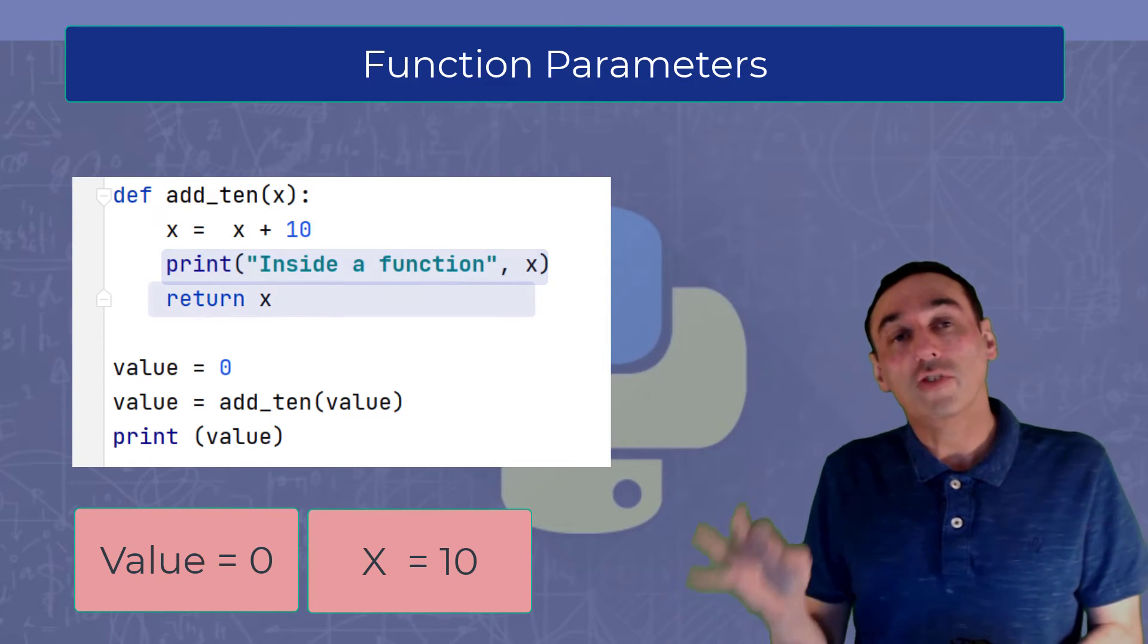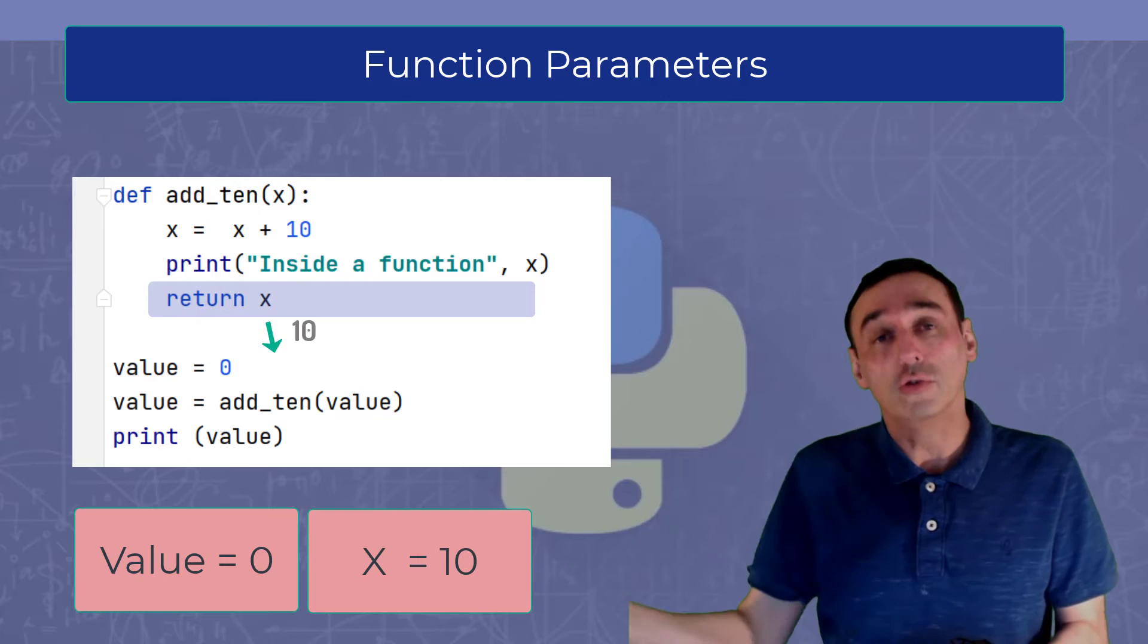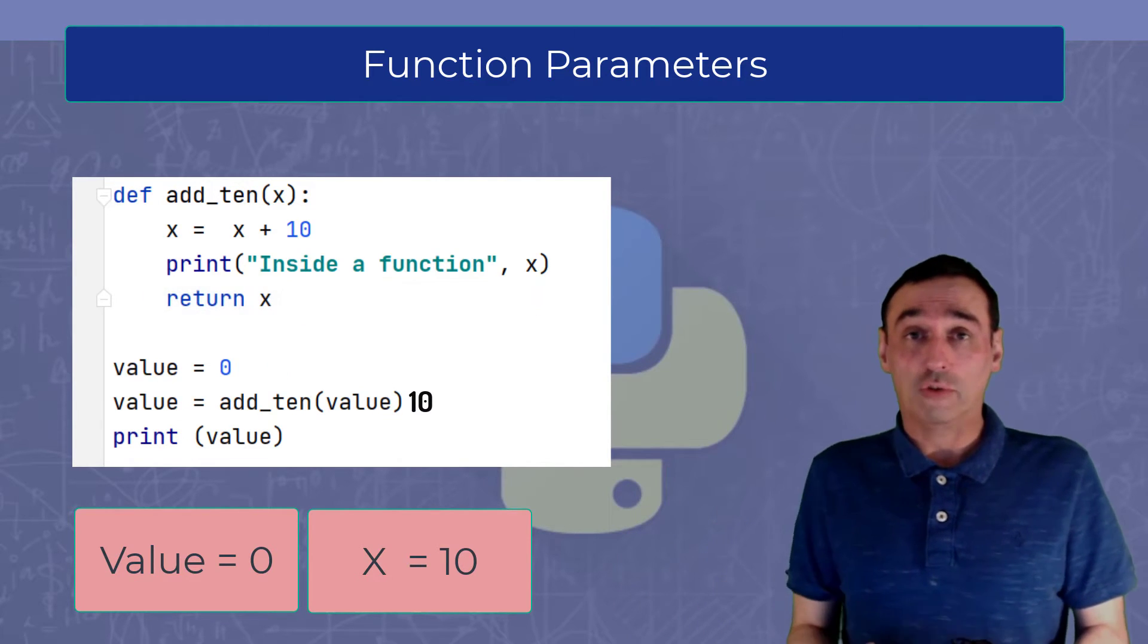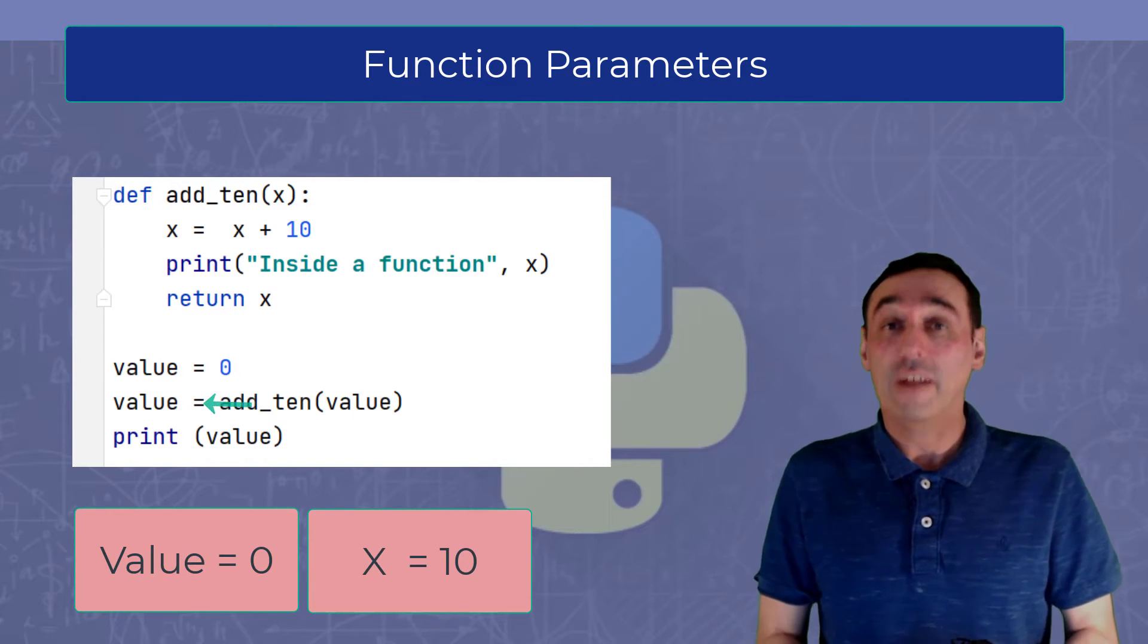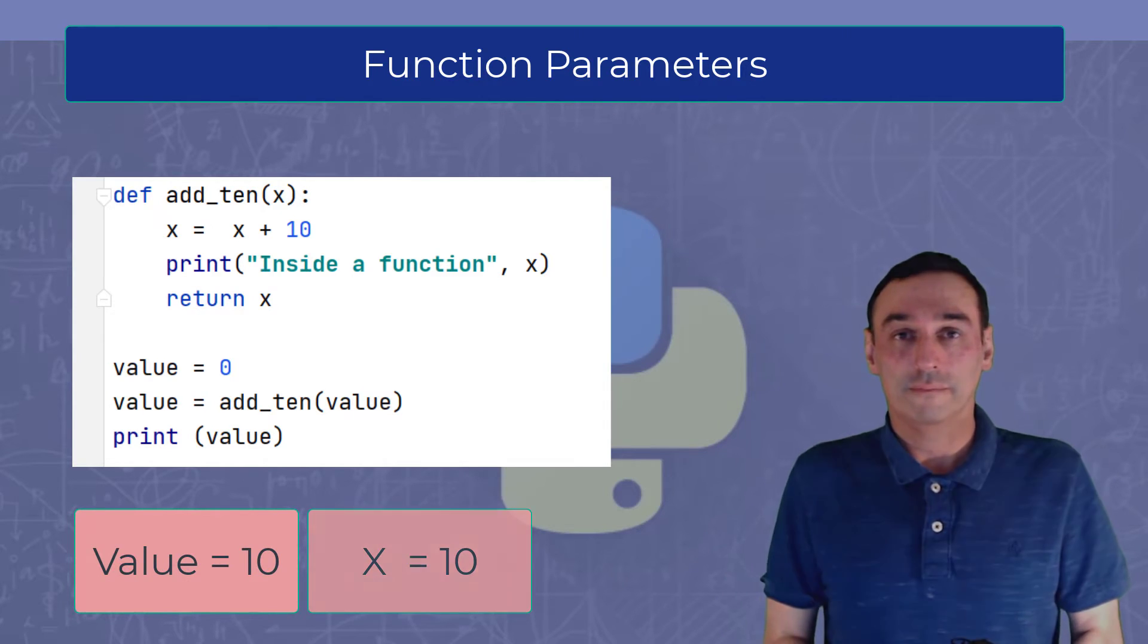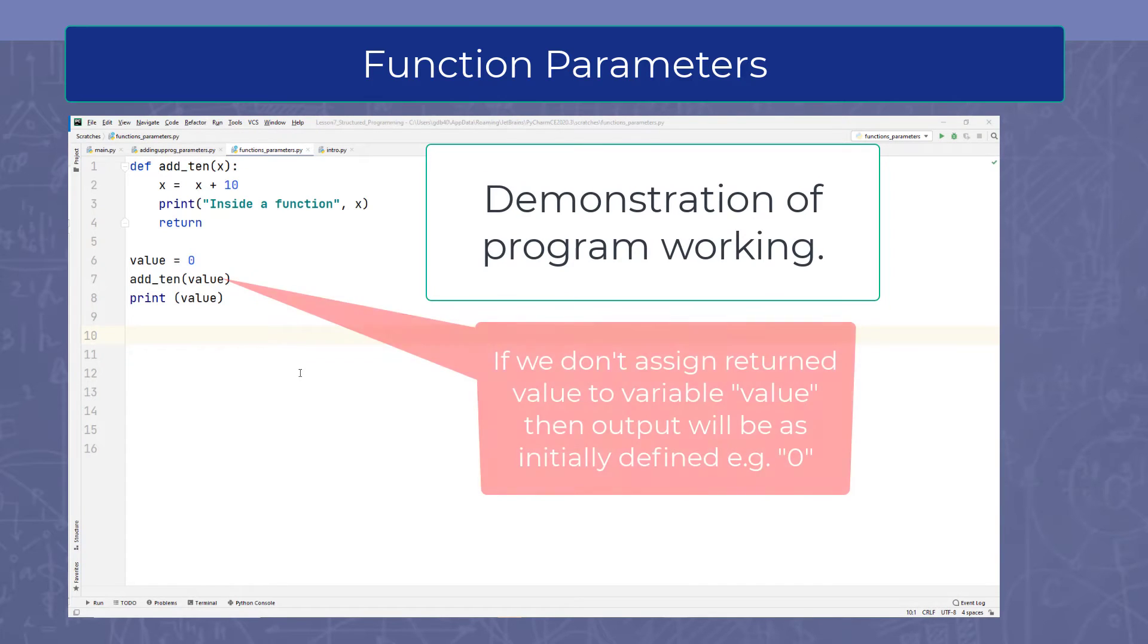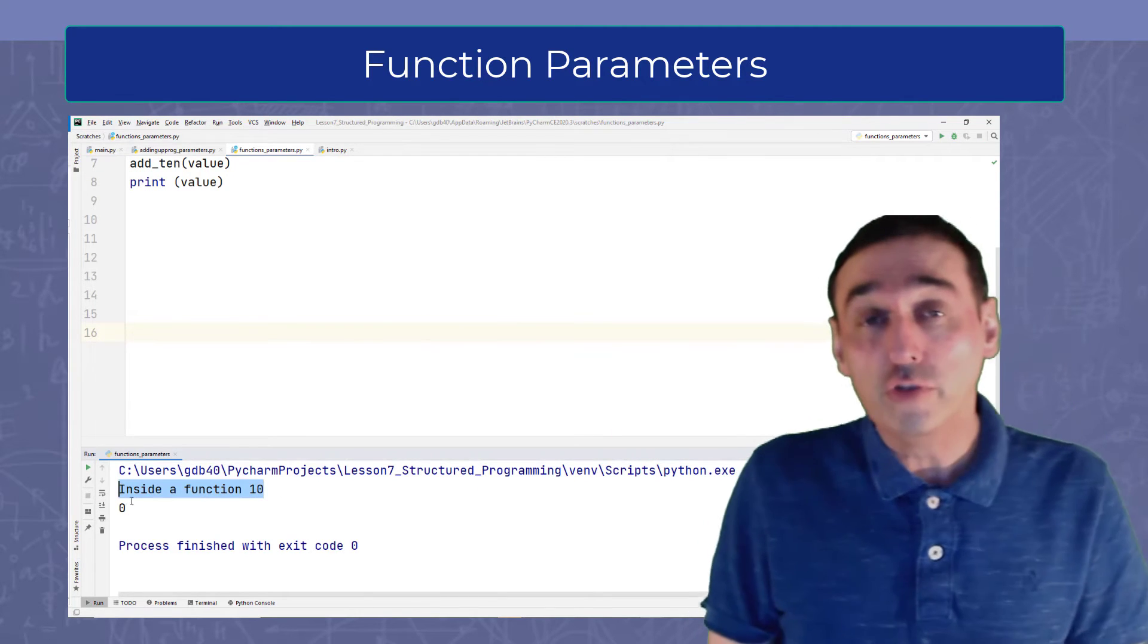We will then use the command return to return the value of x from where it was called from. So x will now be returned back down to where it was called from, which will in turn be assigned back to the variable value. So value will now equal 10. So now you can see how useful parameters are in functions and we can pass different values to different functions and return different values.